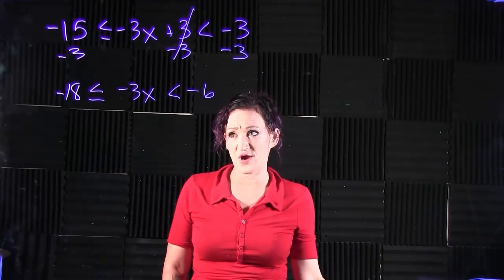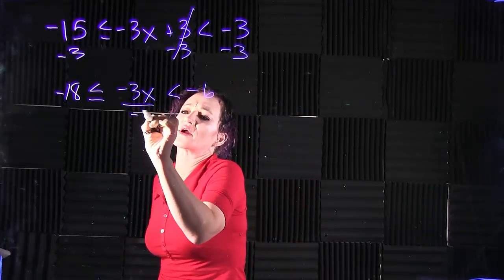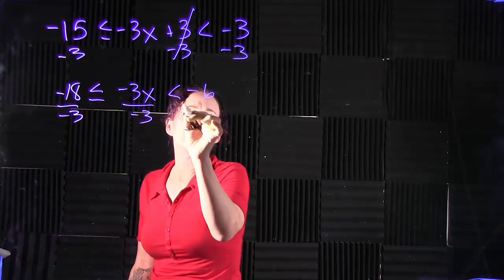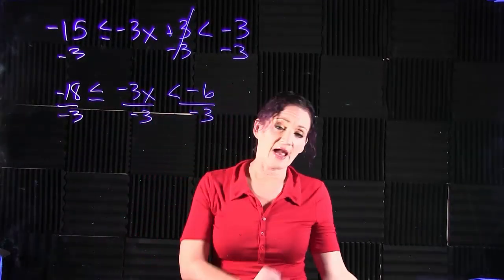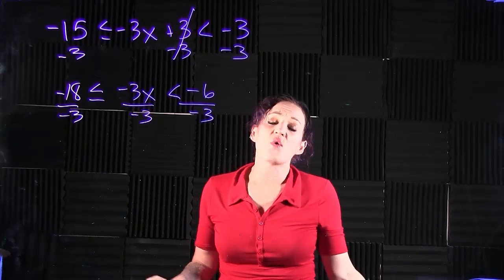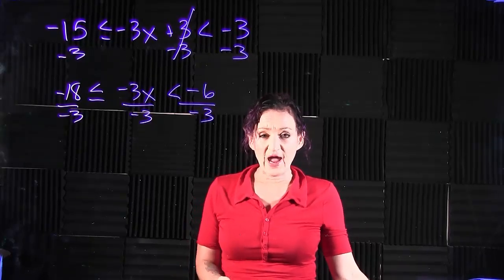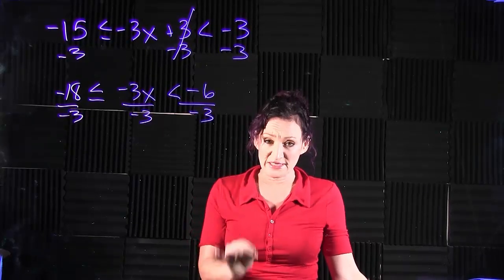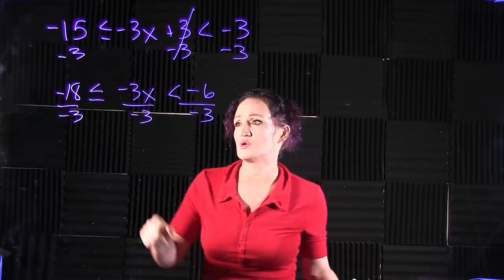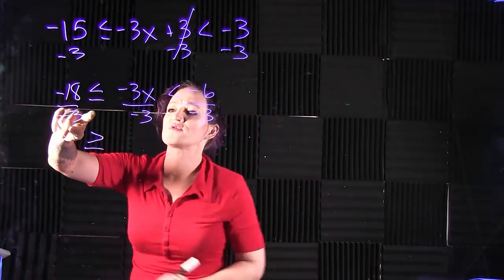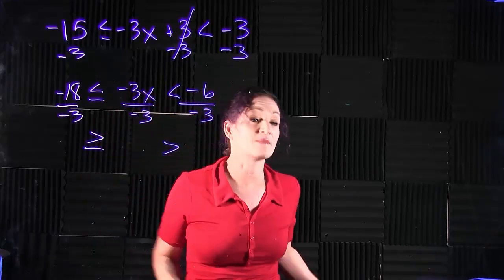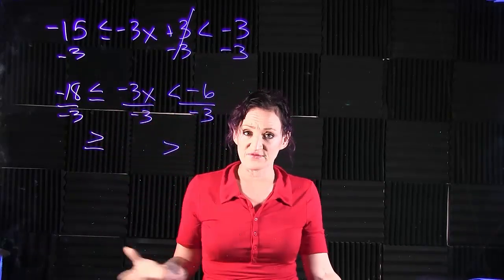Still solving the middle section for x, we need to divide out that coefficient. So we are going to divide all three sides by negative 3. When it comes to inequalities, when you multiply or divide by a negative number, you must flip the inequality symbol. So this is going to become a greater than or equal to, this is going to become a greater than.